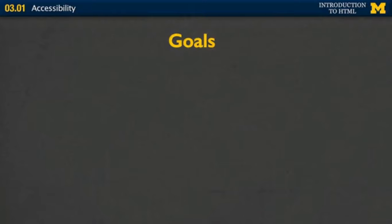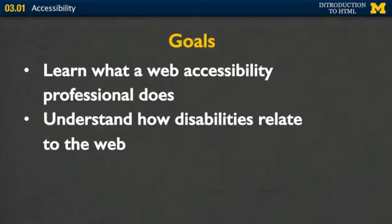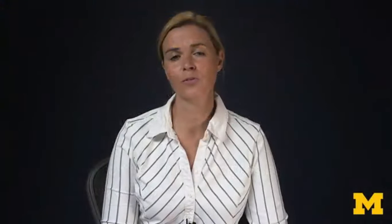So today, we're going to talk about three things. First, I'd like to explain what a web accessibility professional does. Second, we're going to talk in-depth about how disabilities relate to the web. Finally, I'm going to introduce for the first time the four principles of accessible interface design. These four principles are something that will hopefully guide you throughout the entire time you're making web pages.